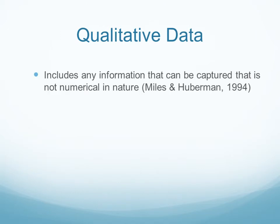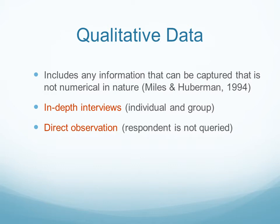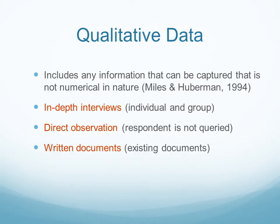Qualitative data, in general, includes any information that can be captured that is not numerical in nature. This could be in-depth interviews of individuals and groups, or direct observations where the respondent is not queried — you're just observing them. Observations could be direct or indirect, such as cameras at Wegmans observing shopping patterns. You can also use written documents, open-ended survey responses, historical data, or complaint letters. Qualitative data encompasses a whole lot of different units of analysis.